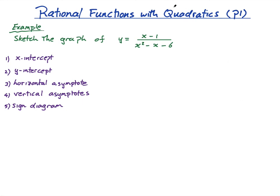Hi everyone. I'm going to do two lessons on rational functions with quadratics. This is part one, and the next one will be part two. Basically, in one of them you have your quadratic in the denominator, and in the other you have your quadratic in the numerator, with the other function being linear. So it's like a linear function over a quadratic.